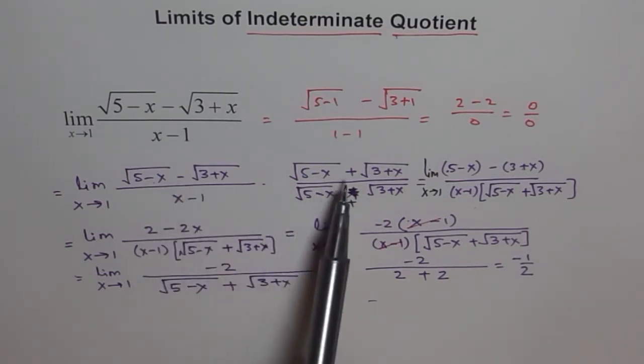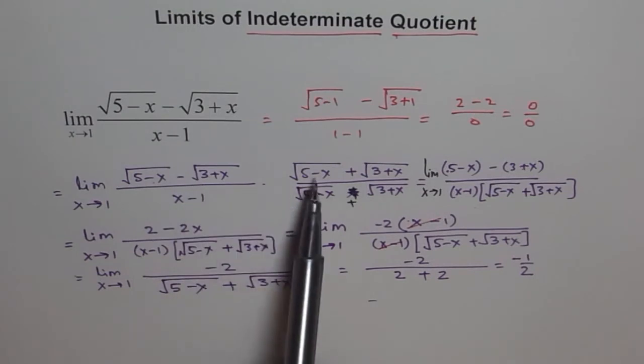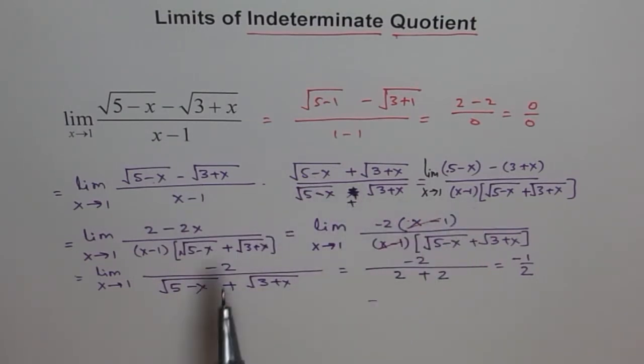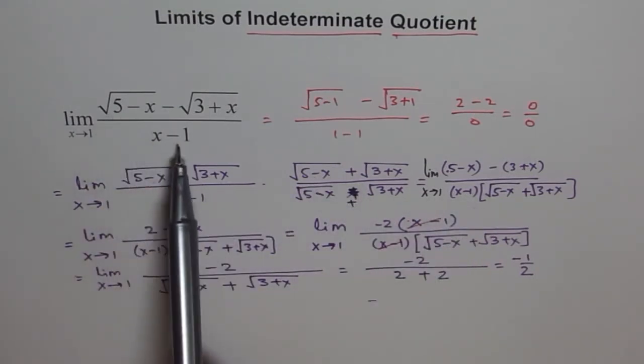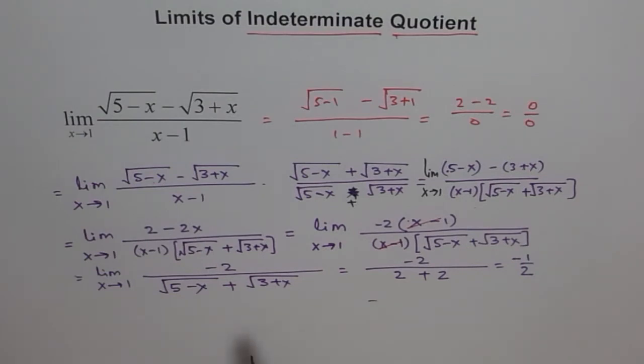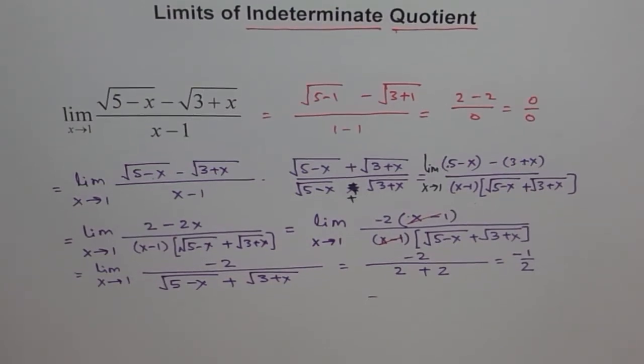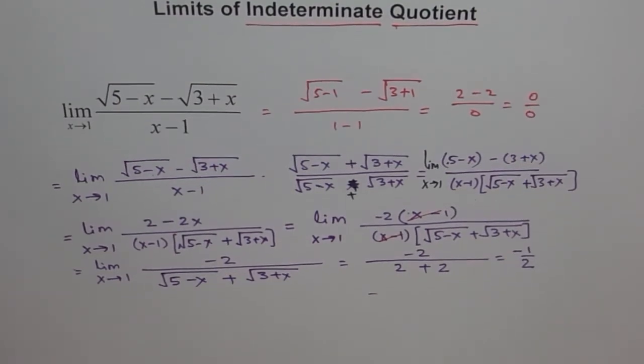Since there are radicals we adopted the method of rationalization. So we multiplied and divided by the conjugate of the numerator and simplified it. We got a common factor which was making it 0 over 0. That's important. And once we get rid of that, then we can always substitute 1 and get the answer. I hope you appreciate what we have done and understand the method.